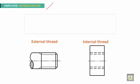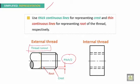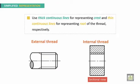For the simplified representation, which will be adopted and used for this course, thick continuous lines represent crests and thin continuous lines represent roots of the thread. Here we have the root and here we have the crests. The chamfer is half of the pitch. This zone or region is the thread run-out. In the sectional view for internal thread, hatching lines will cross the root lines.